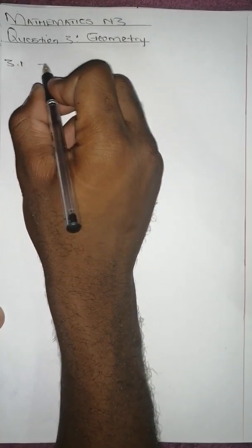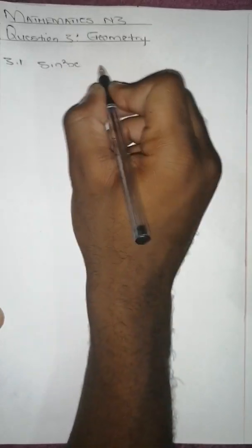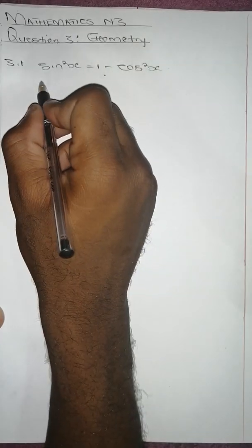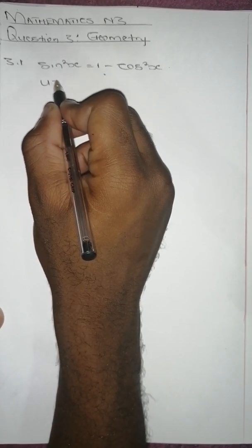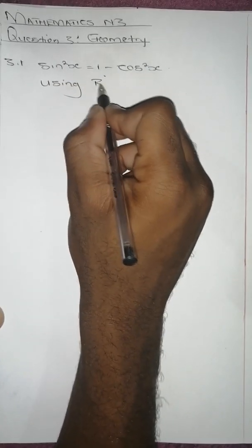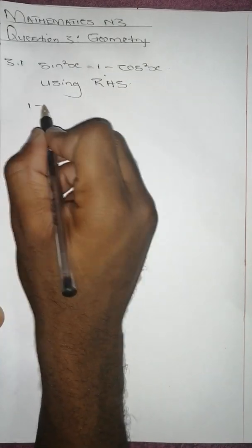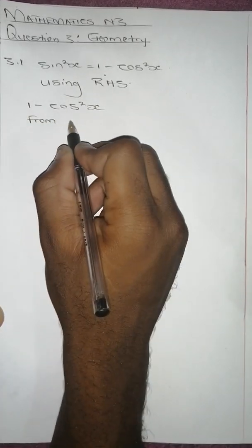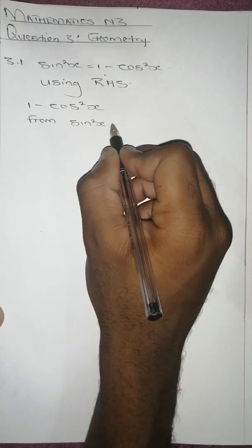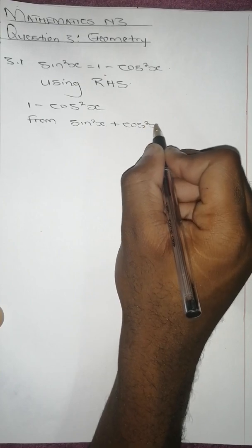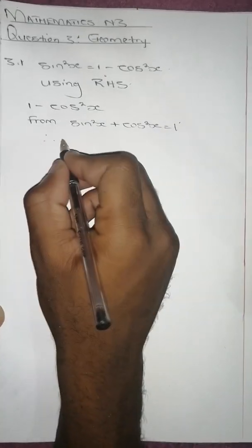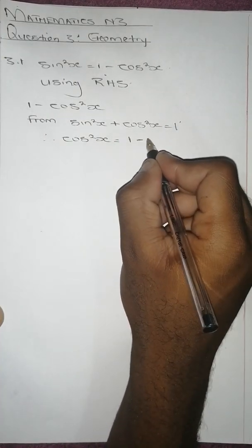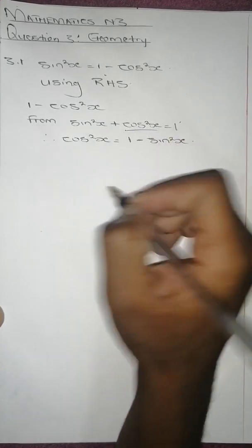Question 3.1: prove that sine squared x equals 1 minus cos squared x. I will use the right-hand side to do that. Using the right-hand side: 1 minus cos squared x. From the identity sine squared x plus cos squared x equals 1, we get that cos squared x equals 1 minus sine squared x.